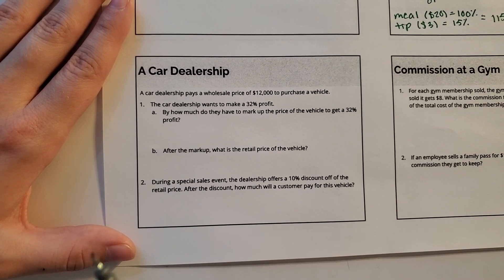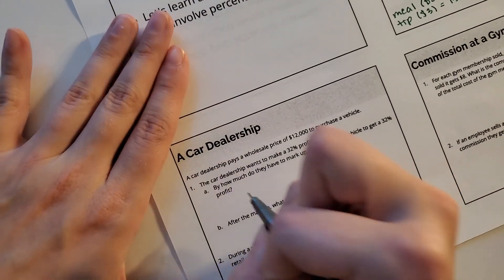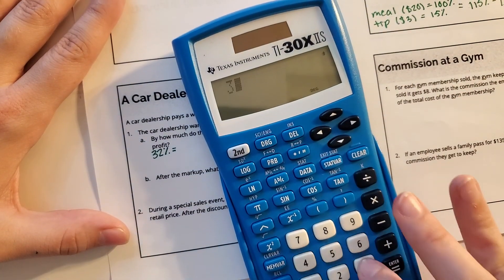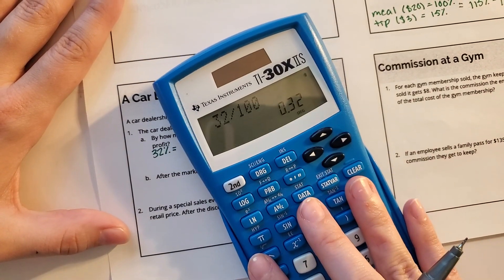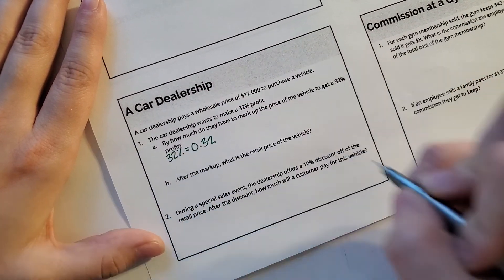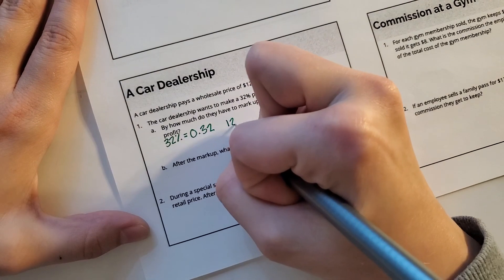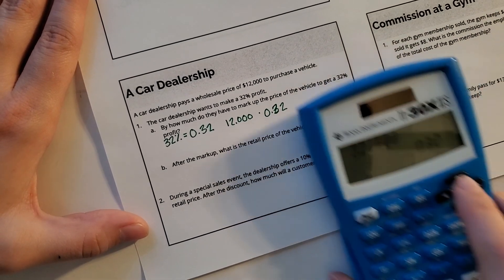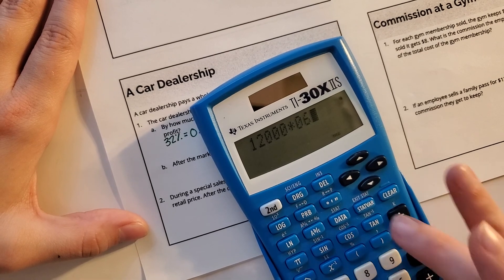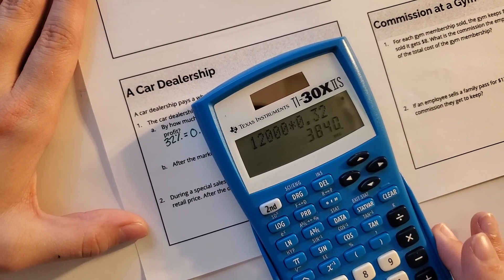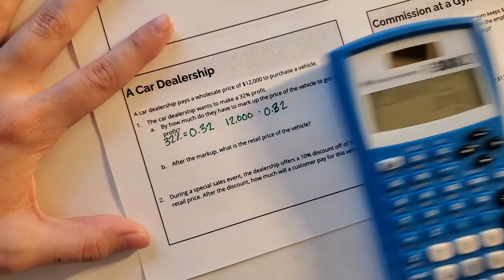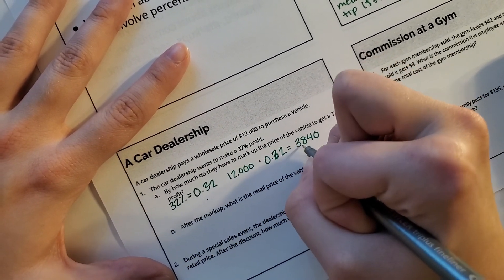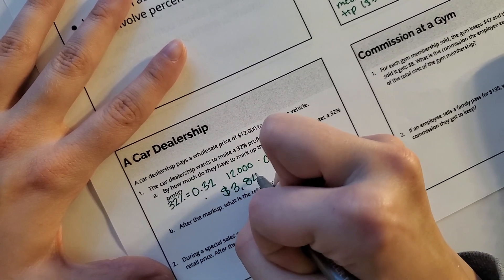So by how much do they have to mark up the price of the vehicle to get a 32% profit? I'm going to turn 32% into a decimal by taking 32 and dividing by 100, which gives me 0.32. And now I can take my $12,000 and multiply by 0.32. That's going to give me $3,840.